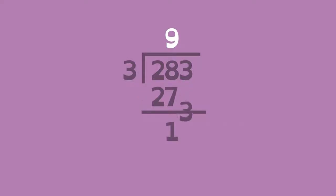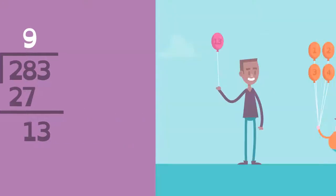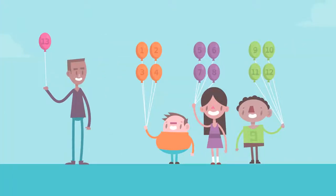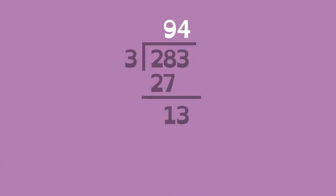Now, bring down the 3 and divide by 3. 13 can be divided into 3 groups of 4 with 1 left over. Write the 4 here and subtract to get a remainder of 1.